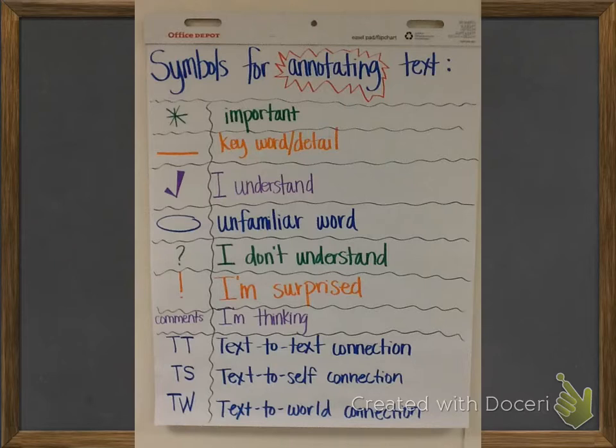In a perfect world, everybody would have their own copy of the text, like a paper copy that they could write on, but we don't.